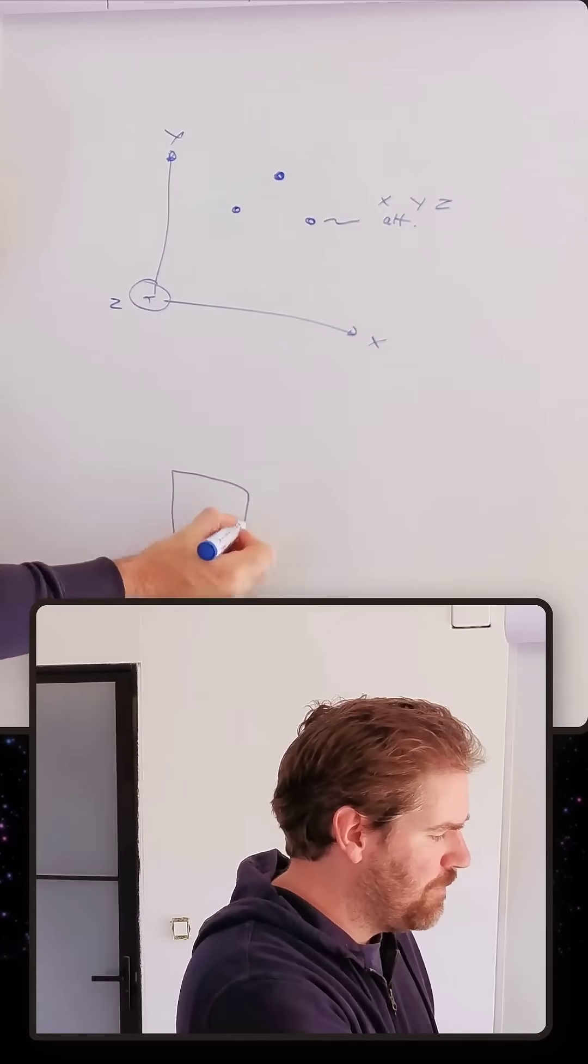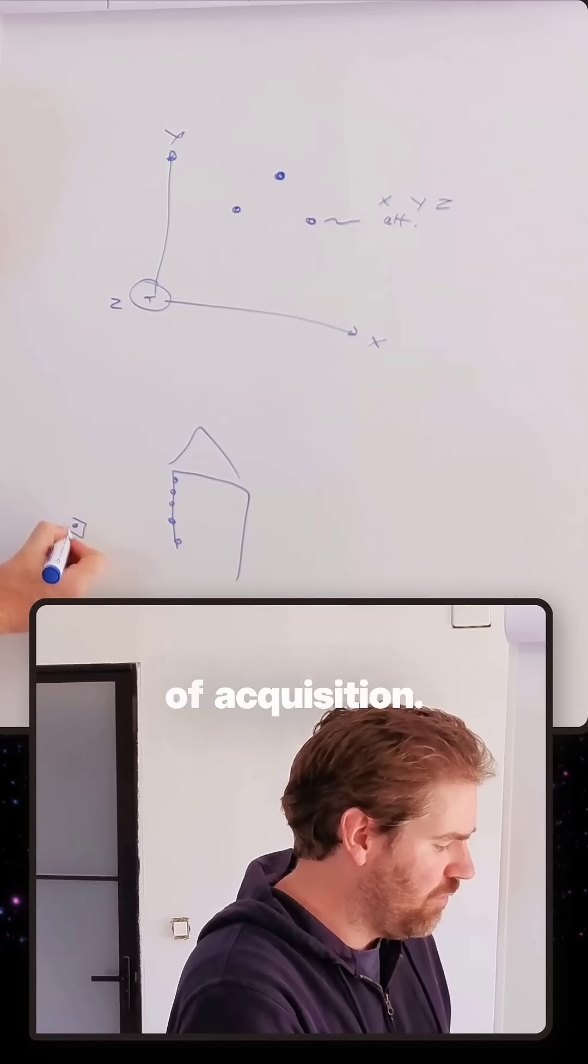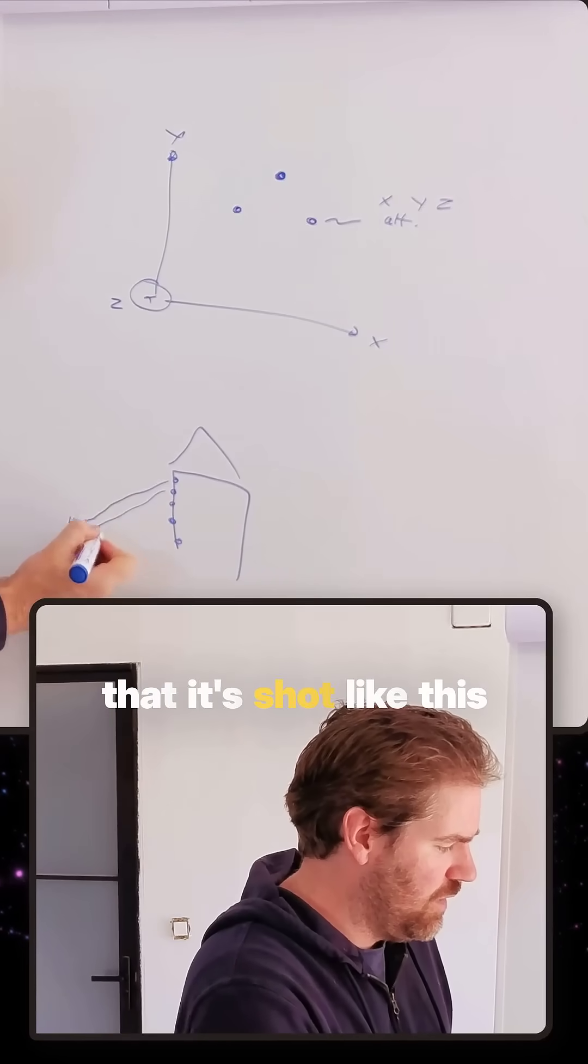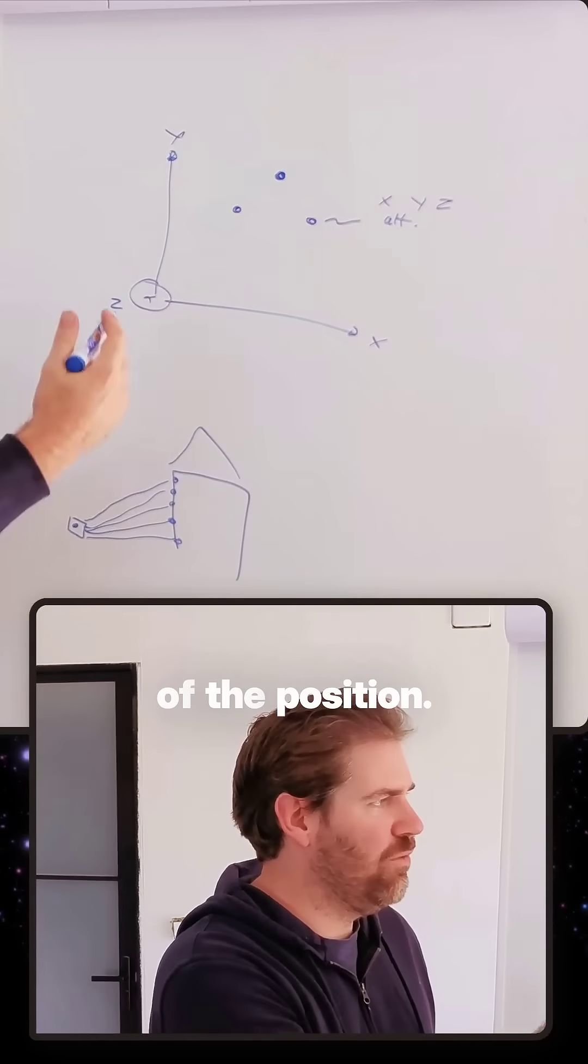So if this is my house, it will be sampled by several points on the surface that is visible from the center of acquisition. If it's here, you see that it's shot like this and it returns the information of the position.